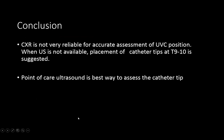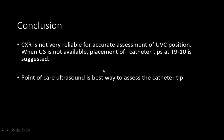In conclusion, chest X-ray is not reliably accurate for assessing umbilical venous catheter position. Where ultrasound is not available, placing the catheter tip between the upper border of T9 to T10 may be suggested. However, point-of-care ultrasound is the best method — and once trained, it takes only about two to three minutes to confirm the umbilical catheter position.